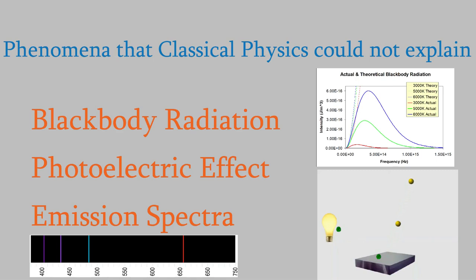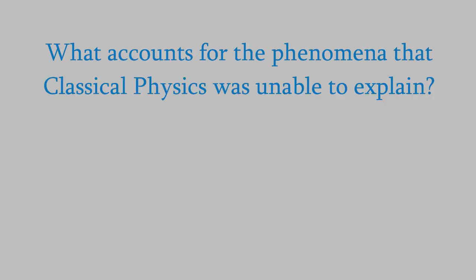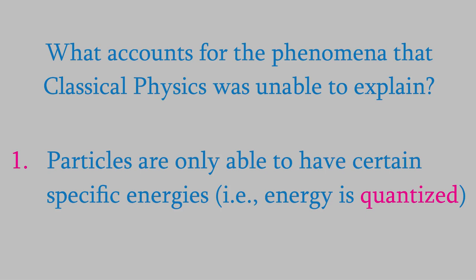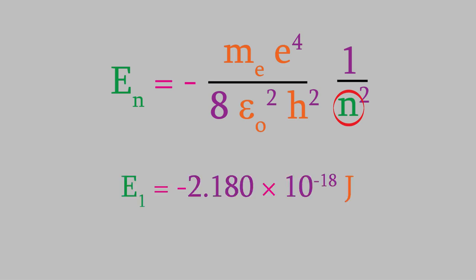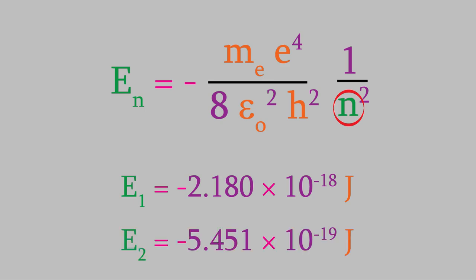We've found out that those phenomena can be explained when we realize two things. First, particles like electrons can only have certain specific energies. For example, as we saw in the last video, the electron in a hydrogen atom must have an energy described by this equation. The variable n must be a positive integer. So the energy of the electron can be either of those two values, but it can't have a value in between. That's not what classical physics predicts — according to classical physics, the energy of an electron could have any value at all.